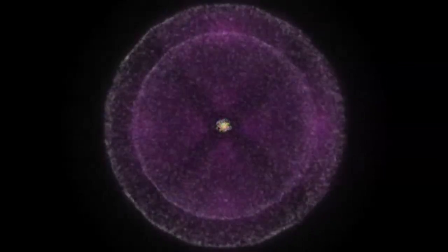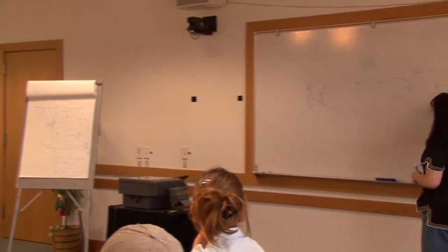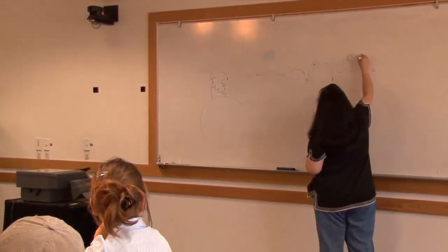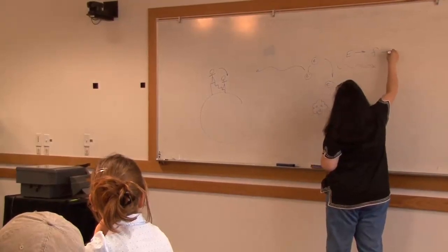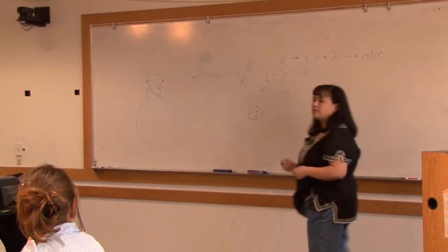And when the electron changes its position or its orientation around the nucleus, it loses that energy in the form of light. Remember that the energy change of the electron relates to the energy carried by the light, and that energy carried by the light relates to the frequency, the wavelength, and therefore the color that you're going to see as a result.